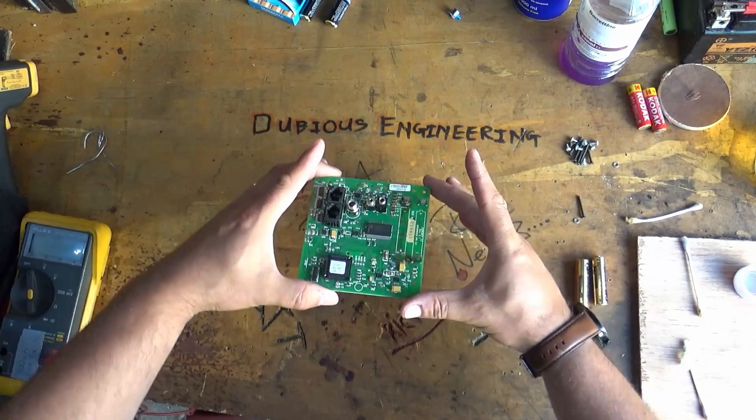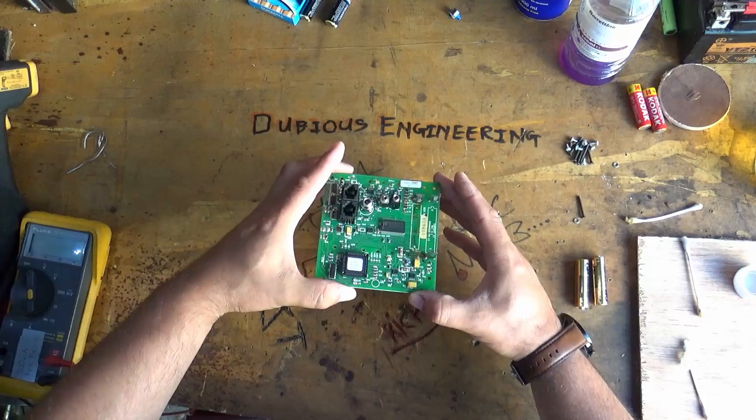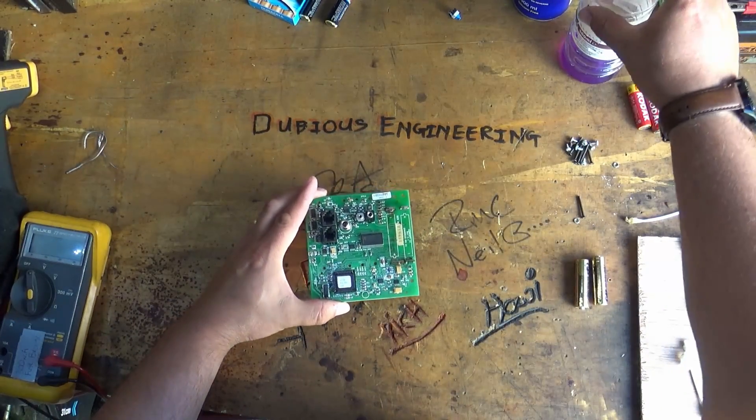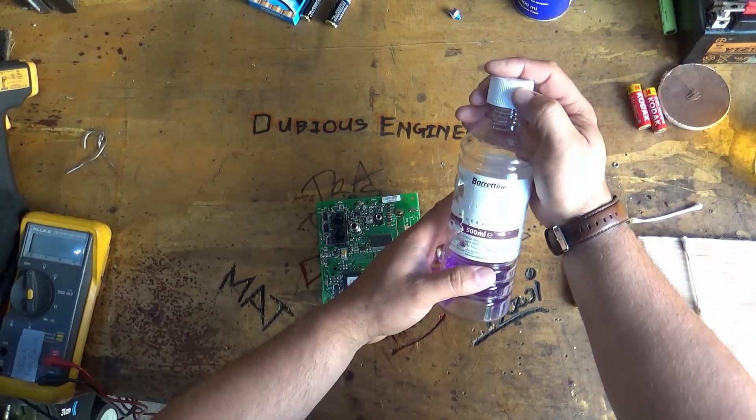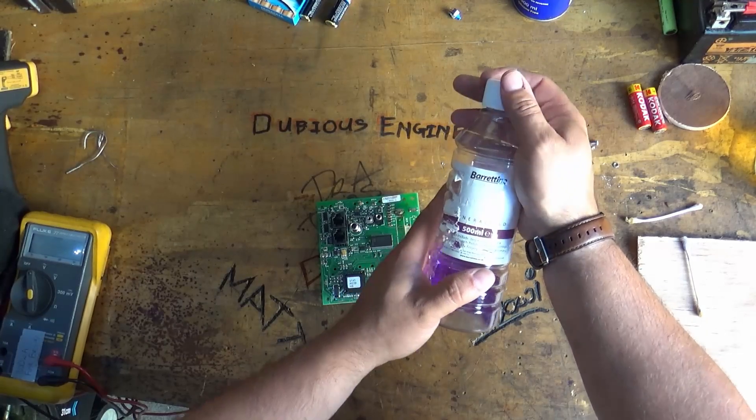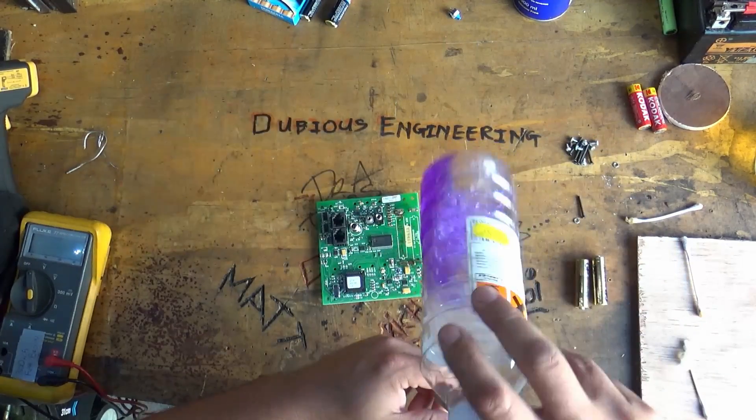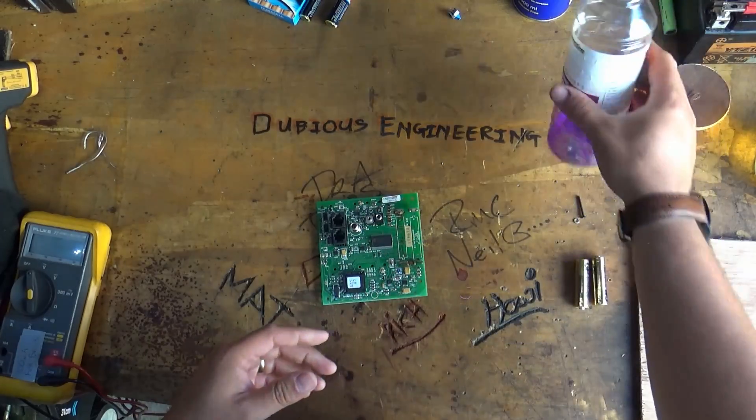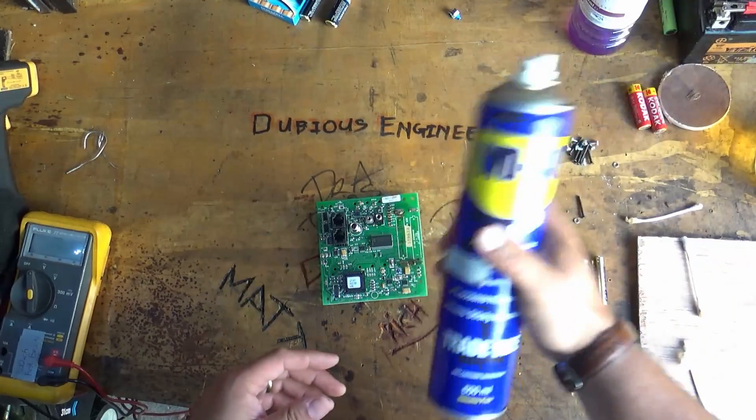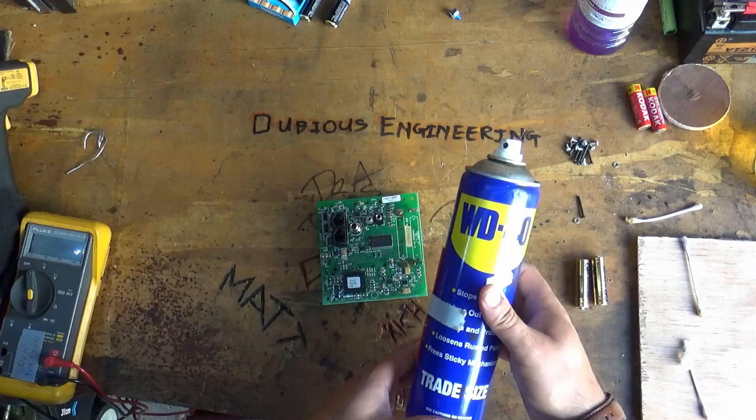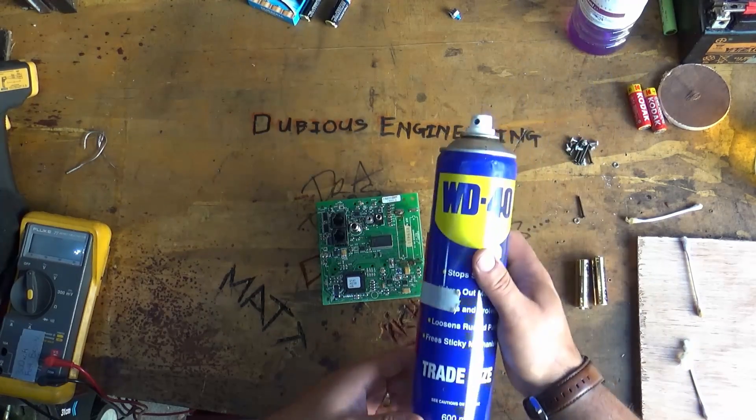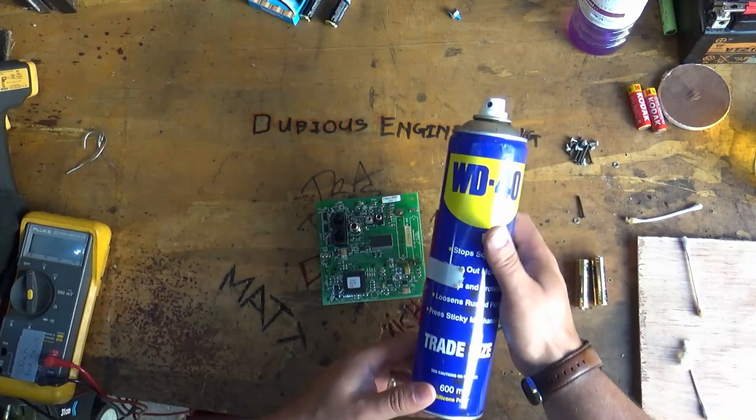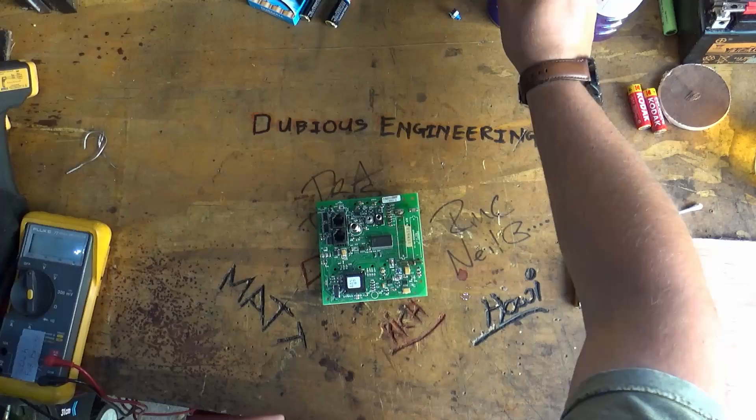So after all of these cleans and mods the question on a lot of people's minds is going to be has he fixed it. So I'm going to answer the first question the purple substance was this stuff here methylated spirits and this guy is WD-40 a big can of WD-40.